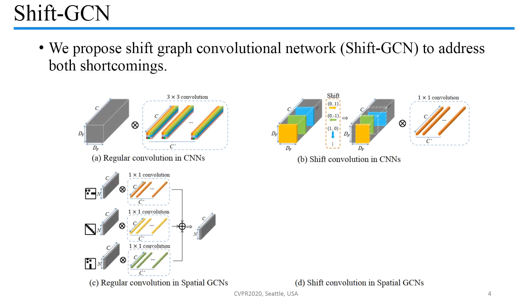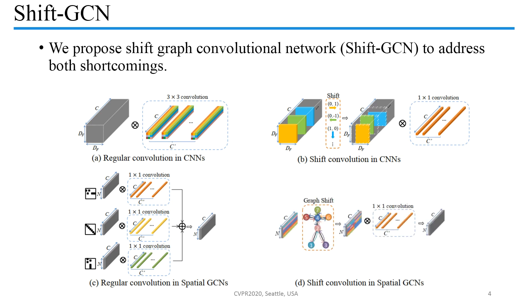We propose Shift Graph Convolutional Network to address both shortcomings. Our Shift GCN is inspired by Shift CNNs. Figure A shows regular convolution in CNNs, and Figure C shows regular convolution in spatial GCNs. Figure B shows Shift Convolution in CNNs, which contains a Shift operation and a Lightweight Pointwise Convolutional Kernel, where the receptive field is specified by the Shift operation. Therefore, a Shift Graph Convolution should contain a Shift Graph operation and a Lightweight Pointwise Convolution, as shown in Figure D.